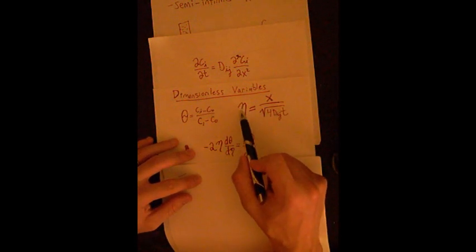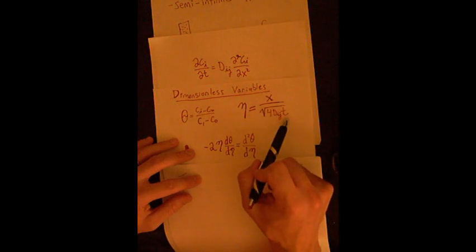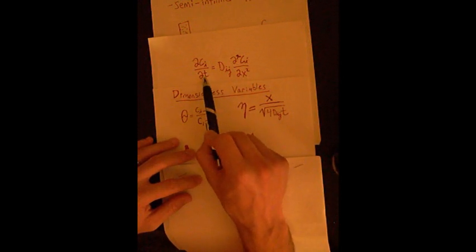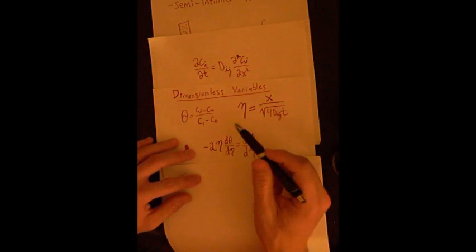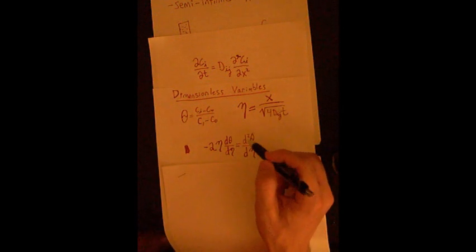We're able to do that again because eta here is dependent upon x and t, and so these two are clumped together into the term eta, and so we're able to put these two terms together basically to get theta just dependent on one variable.